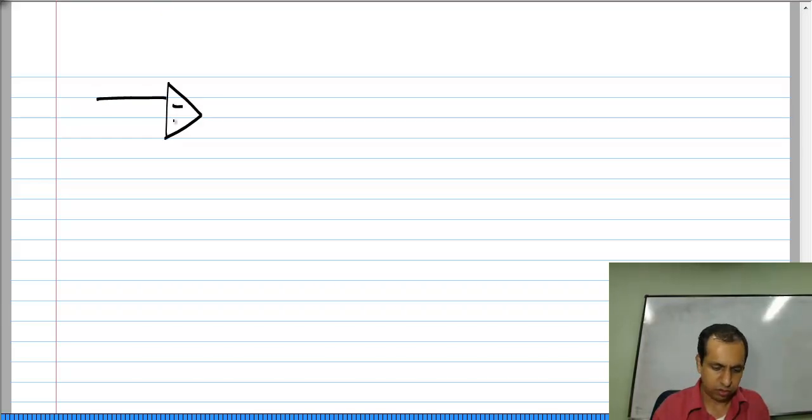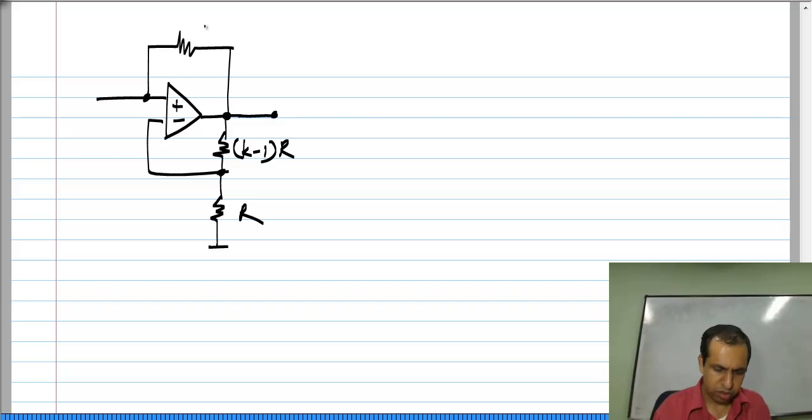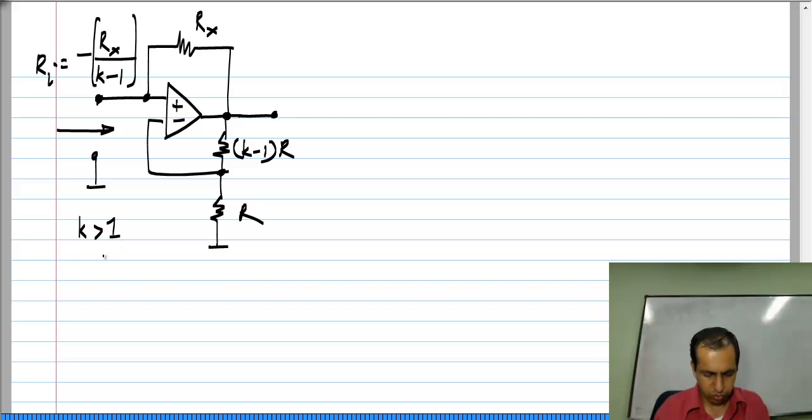This is an amplifier of gain K and I connect some R x. Then between this point and ground, I see a resistance which is minus R x divided by K minus 1. And in this circuit, K is more than 1.